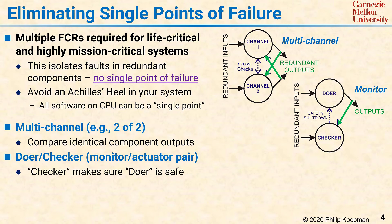A doer-checker approach can be attractive because the checker can often be built out of simpler hardware than the doer and have simpler software that is easier to get right. Because the doer and checker often are somewhat diverse, that diversity provides an additional argument for independent software failures. However, to argue that diversity provides safety requires significant effort to demonstrate actual diversity between the doer and checker software.